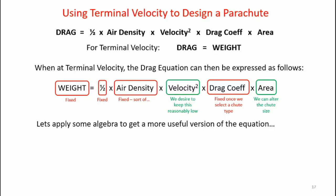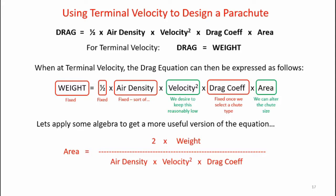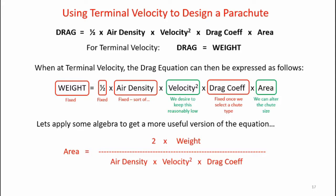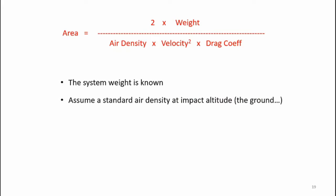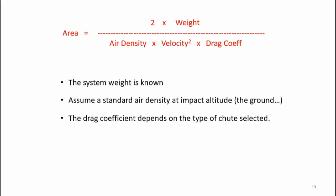By applying some algebra, we can get a more useful version of the drag equation: area equals two times the weight of the system divided by the air density times velocity squared times the drag coefficient. The system weight is known, we assume a standard air density at the impact altitude, the drag coefficient depends on the type of chute selected, and the designer selects the desired impact velocity. We use those values to calculate the required area of the parachute.